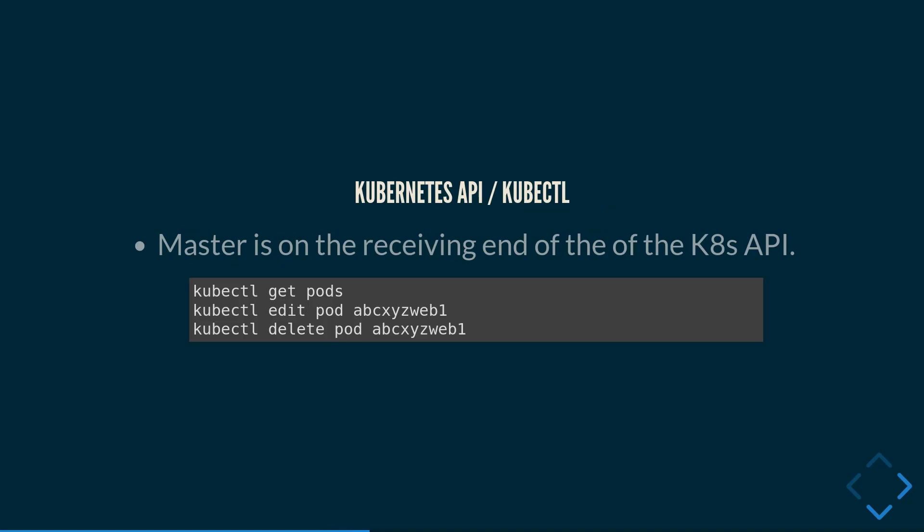The way in which you interact with Kubernetes is through the API or through the command line utility kubectl. The master node is on the receiving end of the Kubernetes API, and kubectl also uses the Kubernetes API behind the scenes. Commands you could run include getting a list of pods, editing a specific pod, or deleting a specific pod — it basically follows that format.